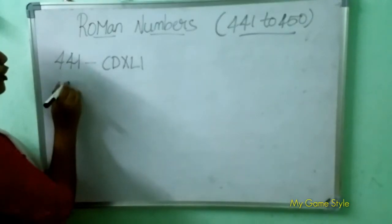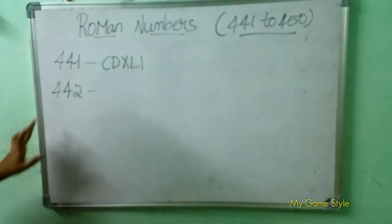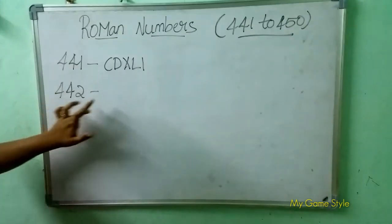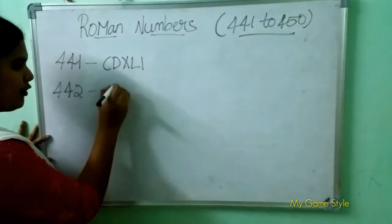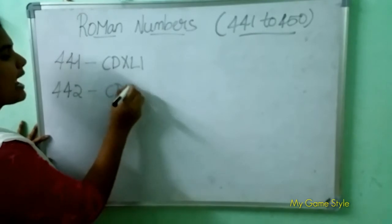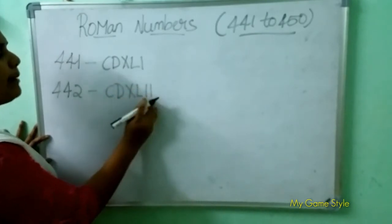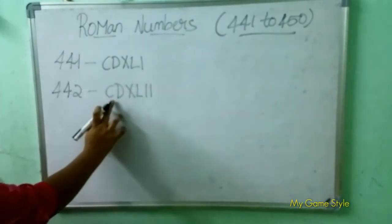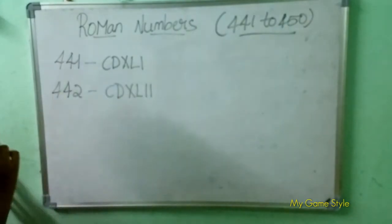Next, 442 means 442. So how to write 442 here? CD is 400, XL is 40, II is 2. So this means 442.